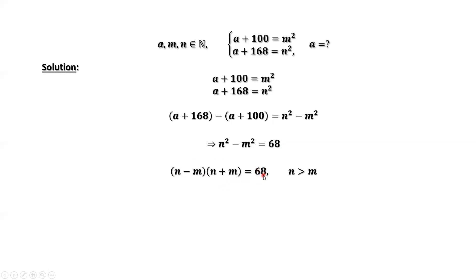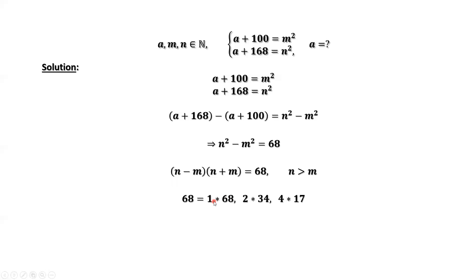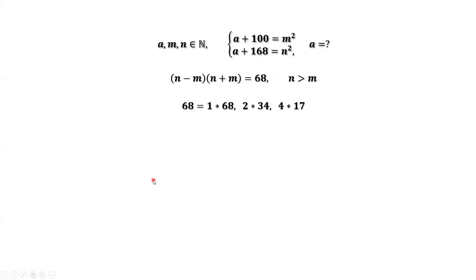The possible combinations for the left-hand side are: 1 times 68, 2 times 34, and 4 times 17. This implies three systems of equations.